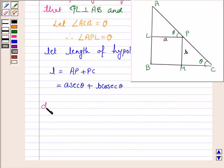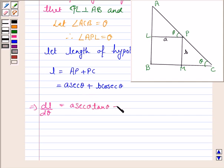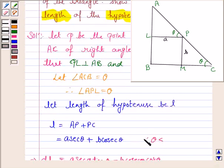Now we will find dL/dθ. The derivative of secant theta is secant theta times tan theta, and the derivative of cosecant theta is minus cosecant theta times cot theta. Here theta lies between 0 and π/2.